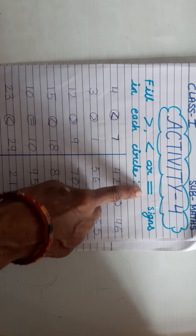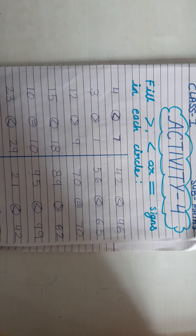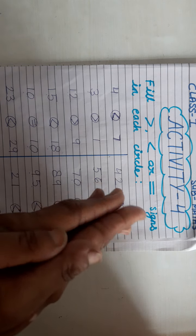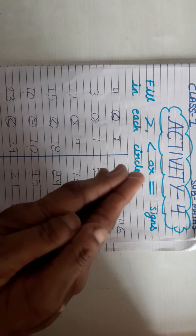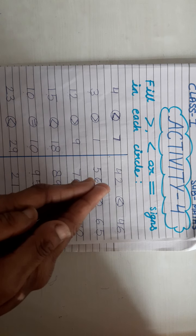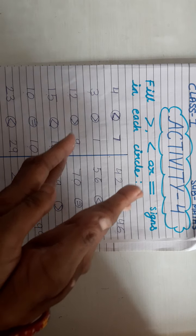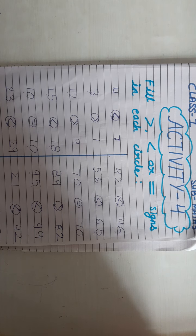Greater than, less than or equal sign हमें put करना है। तो बच्चों, सबसे पहले हम greater number identify करेंगे और फिर उसमें sign put करेंगे — किसे खाते हैं? Greater number को। बड़े number की तरफ हमें अपने crocodile का मुह खोलना है। यह मुह होता है crocodile का — खोला, बंद हो गया। जो ज़्यादा number है उसे खा देगा। Thank you, have a nice day. (We identify the greater number and open the crocodile's mouth towards it.)